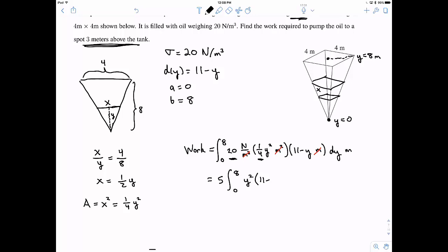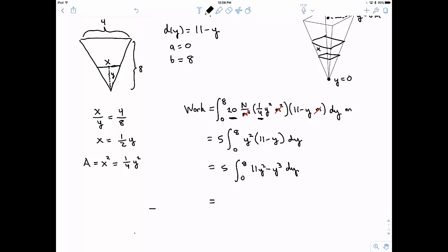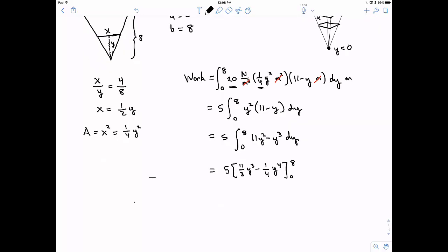And again, now we're safely in calc 1 world, right? So we're just integrating. This is a relatively easy integral. So I'm going to distribute the y squared and then integrate this thing. That'll give me this 5 times. And this is going to be 11 thirds y cubed minus 1 fourth y to the fourth. And I'm evaluating from 0 to 8. Again, it's going to be difficult raising 8 to the third power into the fourth power. So I would expect you to at least get to this point, writing this 11 thirds, 8 cubed minus 1 fourth, 8 to the fourth, all times 5. And this is going to be, of course, newton meters. Remember to include your units. Very important.